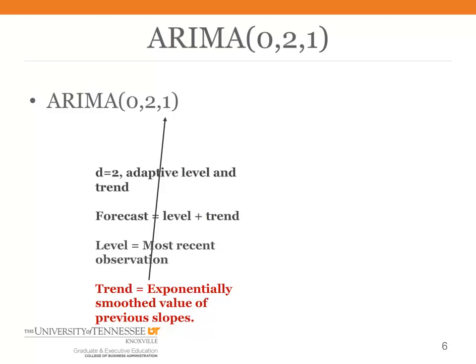And just like the ARIMA(0,2,0), the level will be the most recent observation. What is different is that the trend is the exponentially smooth value of previous slopes. I'm using the word trend and slope pretty much interchangeably when I talk about these.